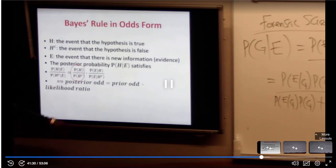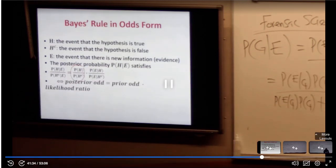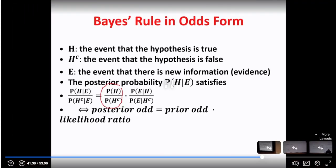The other component is the odds of the likelihood. The odds of likelihood is the probability that there is evidence given the hypothesis is true, over the probability of evidence given the hypothesis is not true. There can be evidence when hypothesis is true, and there can be evidence when hypothesis is not true.